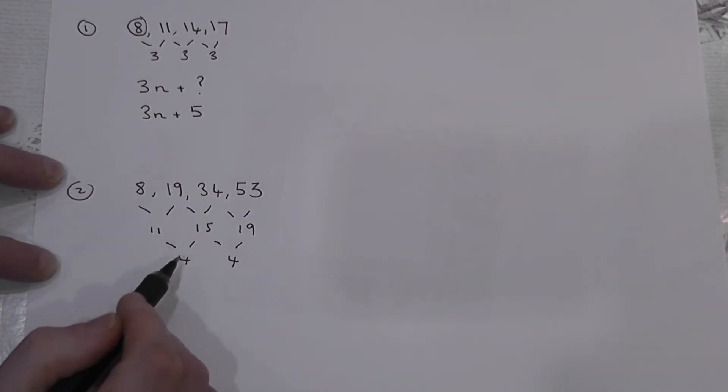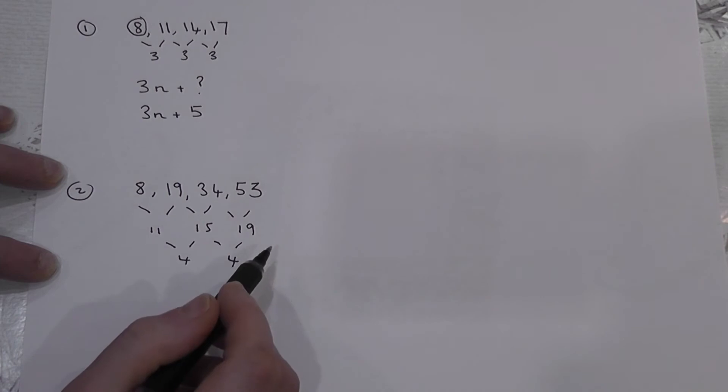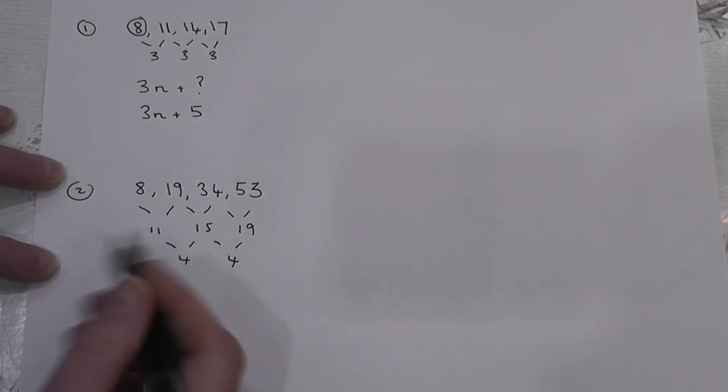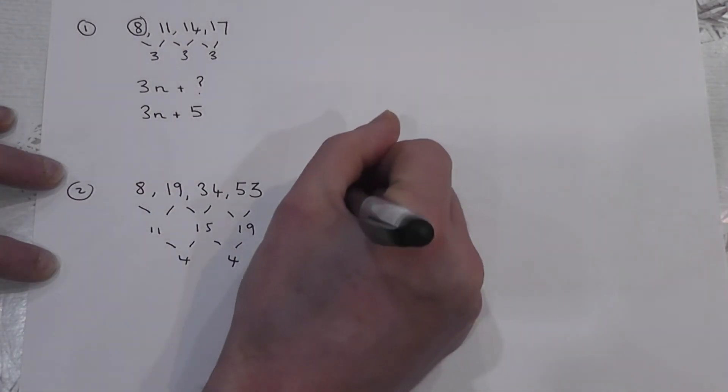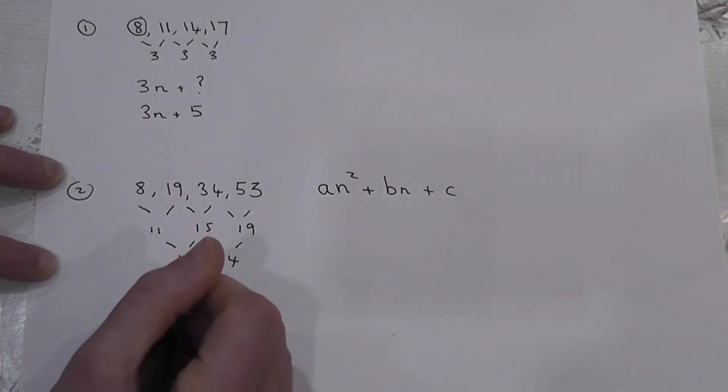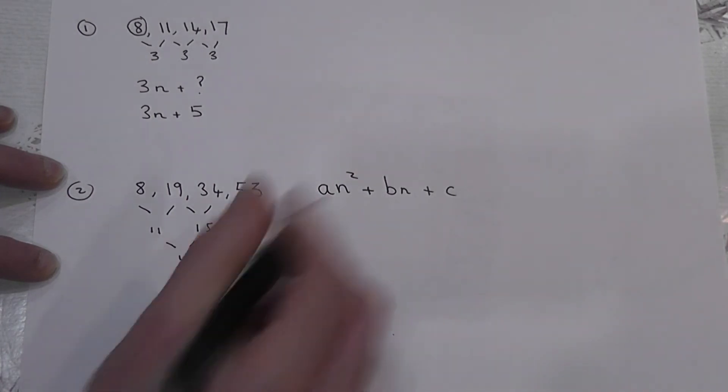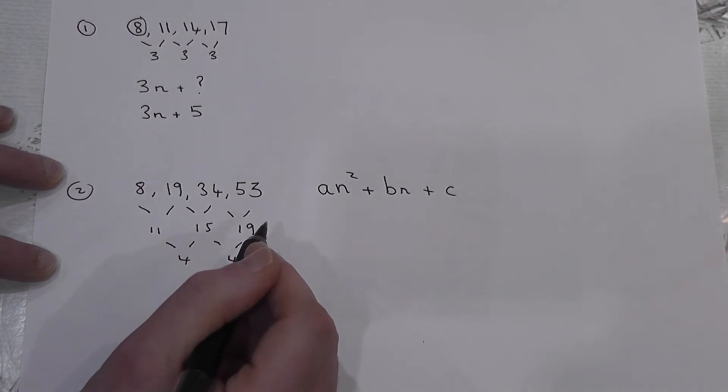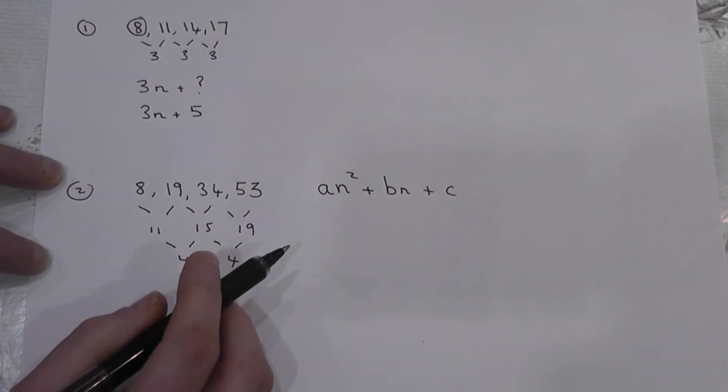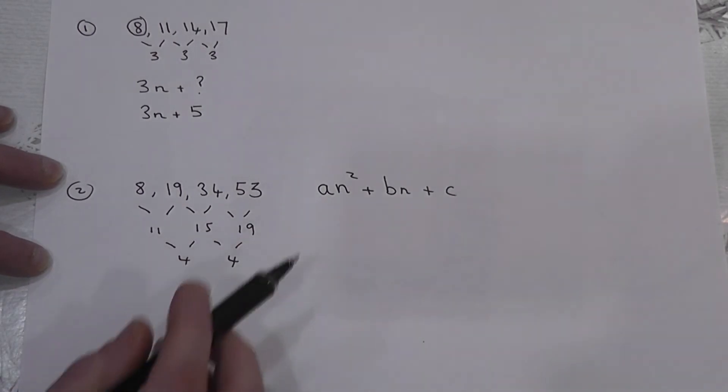And when you get a second difference that's the same each time, it's called a quadratic sequence. And rather than of the form something n plus a number, it's got a different formula of the form an² + bn + c. And the question is, can you find a, b and c in the formula to get the nth term? a, b and c are just unknown numbers. And there's three really simple tricks you can use to find what a, b and c are.